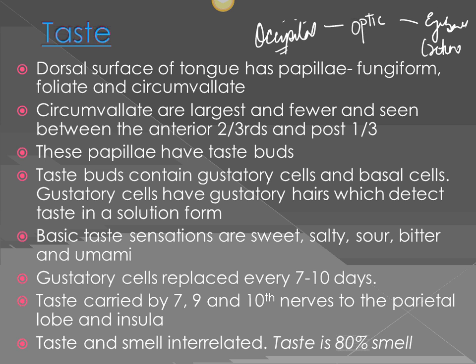In the eyeball we looked at the layers, and in the layers we mentioned the retina. In the retina were photoreceptors — rods and cones — and cones were concentrated in the macula lutea and the fovea centralis. Rods were peripheral; cones were for color vision. Those cones synapsed and went into ganglion cells, which led to the optic nerve and optic disc.